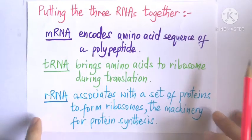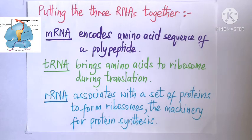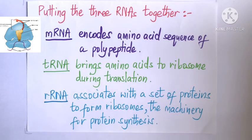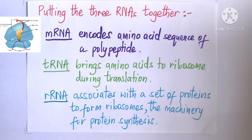Putting all three RNAs together: mRNA encodes the amino acid sequence of a polypeptide; tRNA brings amino acids to the ribosome during translation; and rRNA associates with a set of proteins to form ribosomes, which are the molecular machinery for protein synthesis. In the next lesson, we will learn how these three key components work together during protein synthesis.